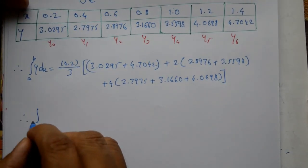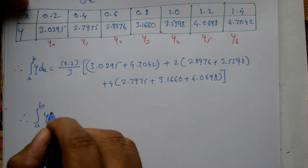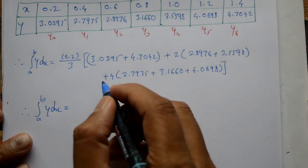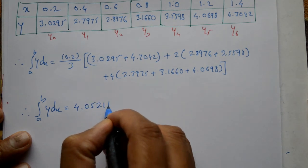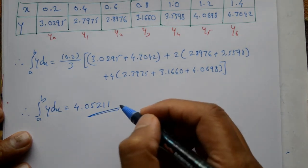Therefore, integration of a to b y dx using calculator is very simple. The value you'll get is 4.05211. This is the required solution.